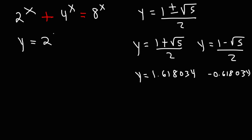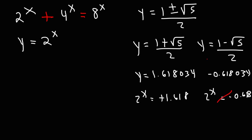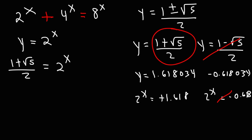Based on our substitution, we said y equals 2 raised to the x. That means 2 to the x equals positive 1.618. However, whenever you have an exponential equation, it can't equal a negative number — 2 raised to the x will never equal negative 0.618. So we eliminate that answer. Replacing y with the valid value, we have 1 plus the square root of 5 divided by 2, equals 2 raised to the x.